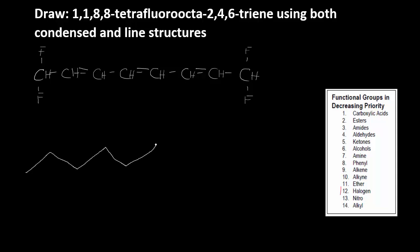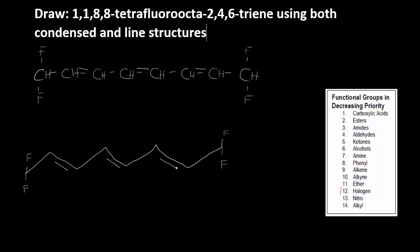Turn it into a line structure. Fluorine at carbon 1, another fluorine at carbon 1. A fluorine at carbon 8, another fluorine at carbon 8. Double bonds at carbons 2, 4, and 6. We're done.